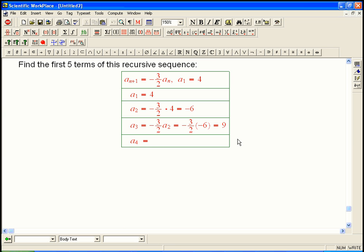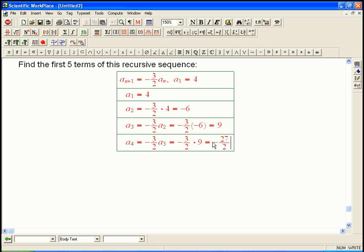Okay. So a four is going to be minus three halves a three. Each time, the next thing in the sequence is just minus three halves of the previous. That's minus three halves times nine. And that is, finally we get a fraction, we get minus twenty-seven halves. And a five is going to be minus three halves times a four, which is going to be plus eighty-one-fourths.